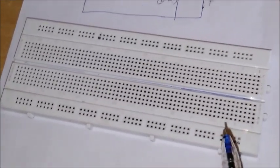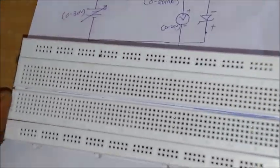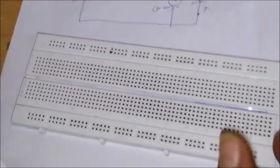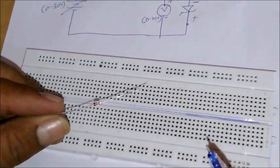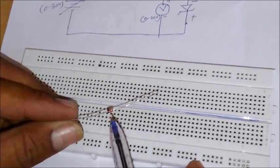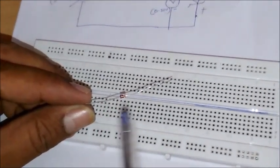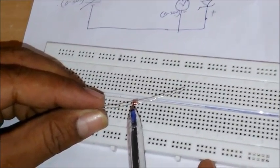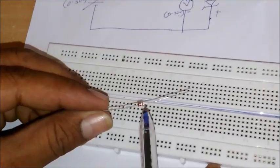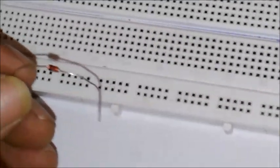Let us proceed to implement this on the breadboard. This is the breadboard we are going to use to implement the given circuit. The main component we have here is the Zener diode. As mentioned at the start, the Zener diode is going to work only in reverse bias. It is mandatory for us to know the terminals of this Zener diode. The black band indicates the cathode, and the other end is the anode.